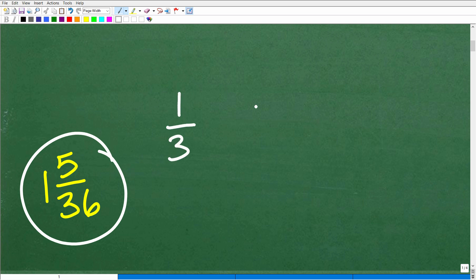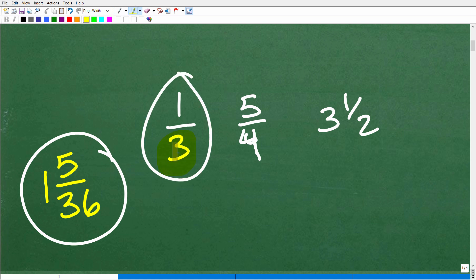If I have 1/3, if I have 5/4, and let's say I have 3 and 1/2, this is what we call a proper fraction because the denominator is bigger - the bottom number is bigger than the top number.